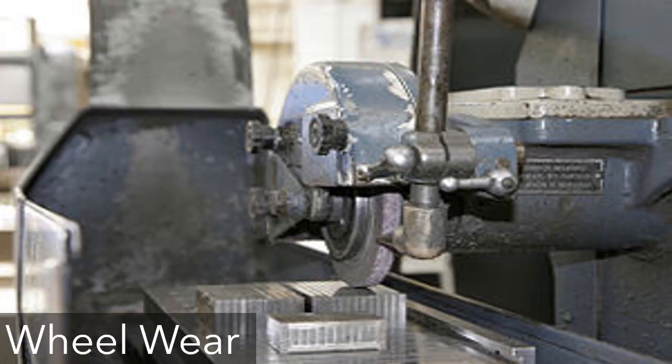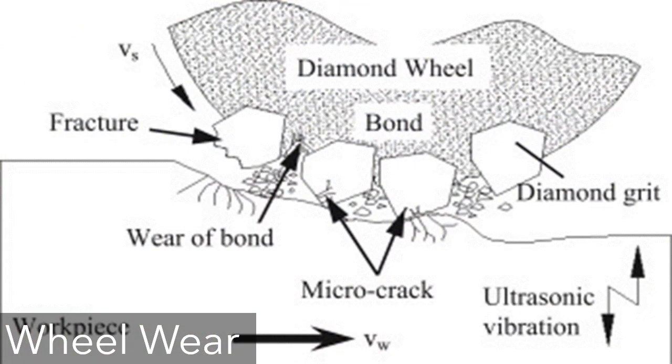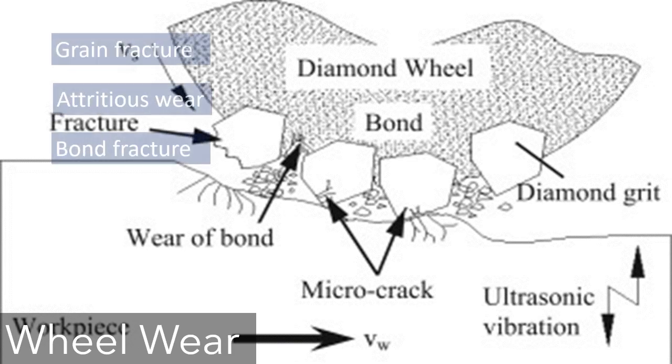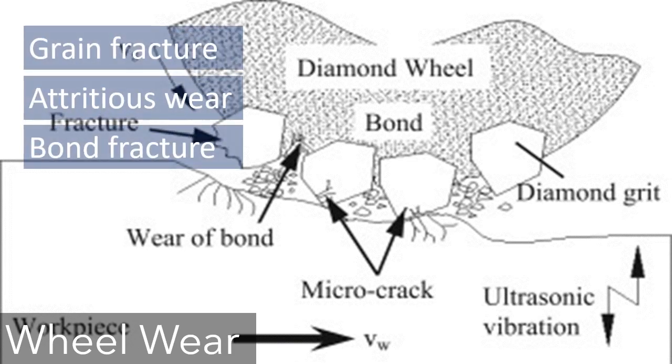The grinding wheels wear, just as conventional cutting tools wear. Three mechanisms are recognized as the principal causes of wear in grinding wheels: first, grain fracture; second, attritious wear; and third, bond fracture.